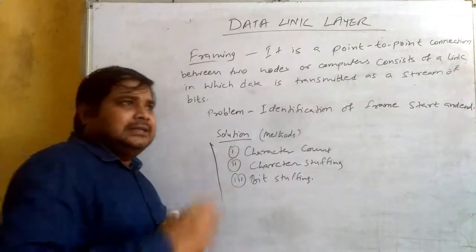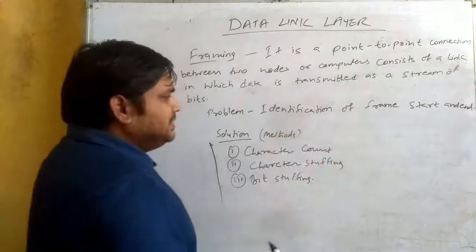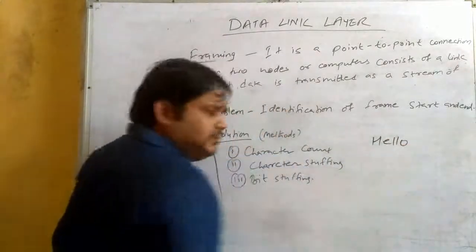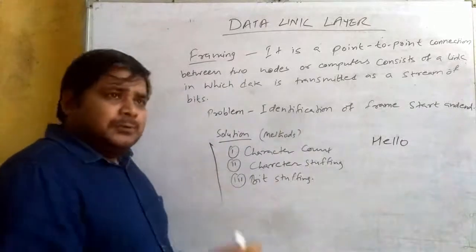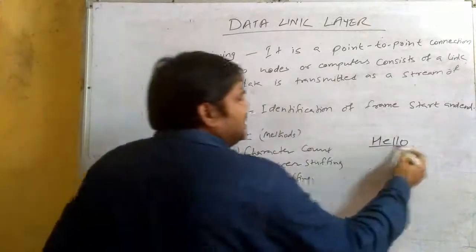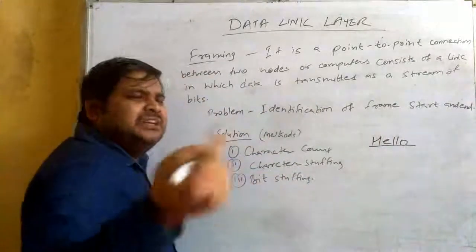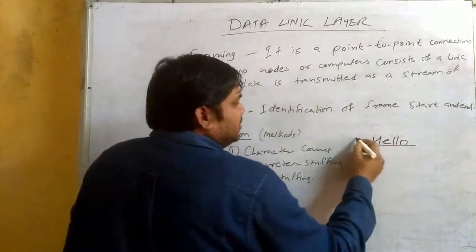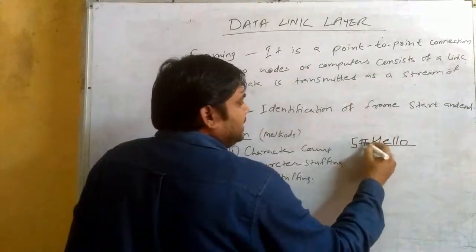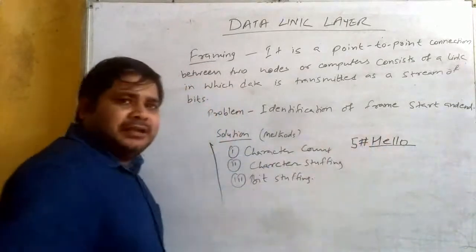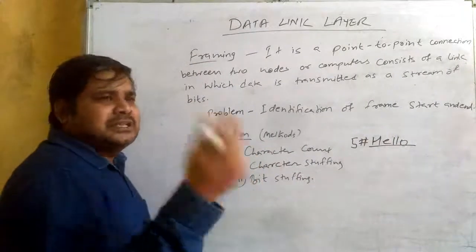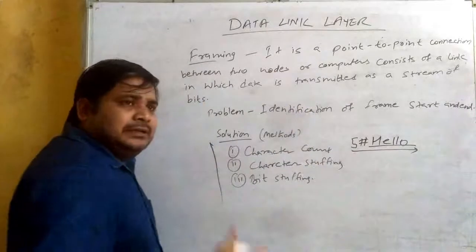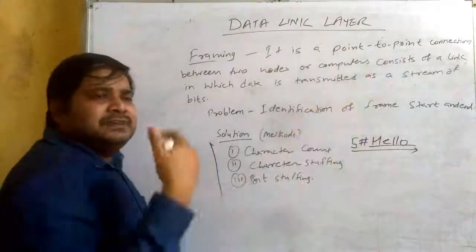When we talk about character count, let's suppose we have an example — we have a word that we want to send: 'hello'. In character count framing, if we know this bit stream, how many characters are here? We have 5 characters. The receiver end reads it and gets 5, which is the character count, and hello is 5 characters.